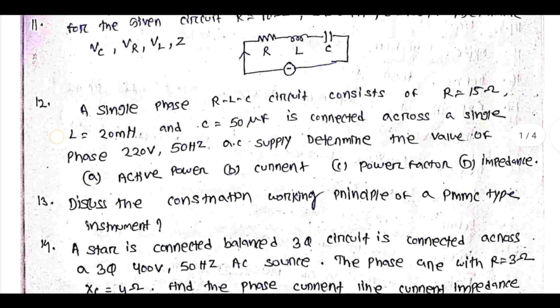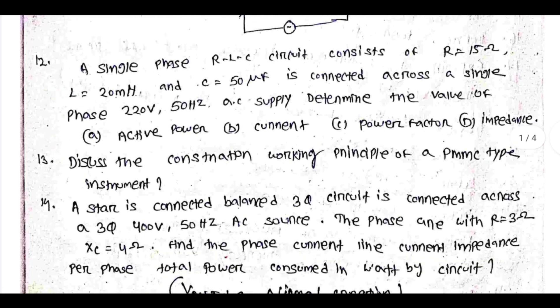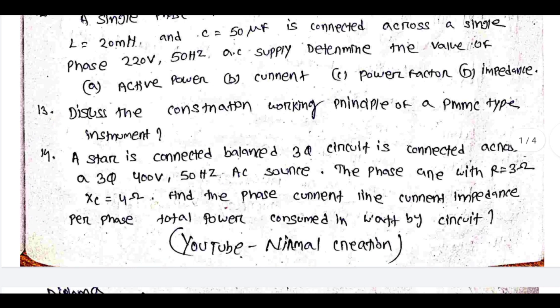A single-phase RLC circuit consists of R = 50 ohm, L = 20 mH, and C = 50 µF, connected across a single-phase 220 volt, 50 Hz AC supply. Determine the values of active power, current, power factor, and impedance.